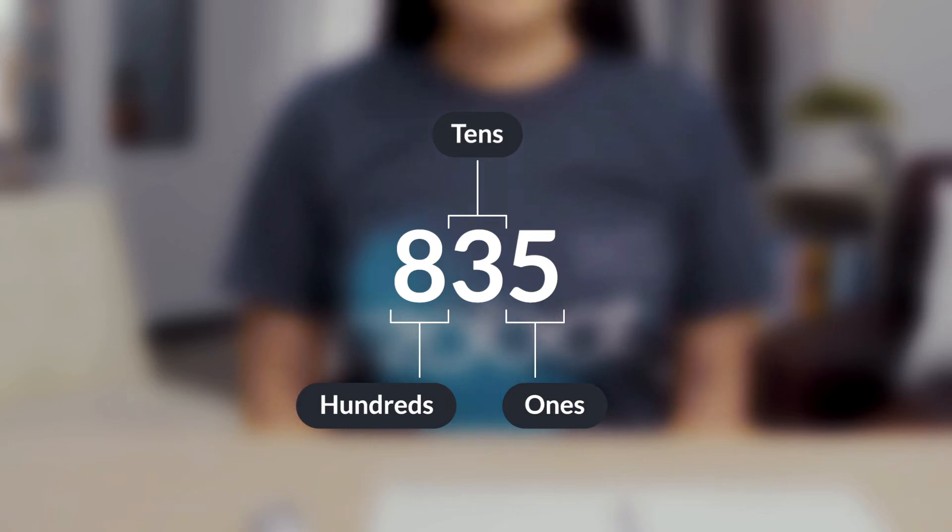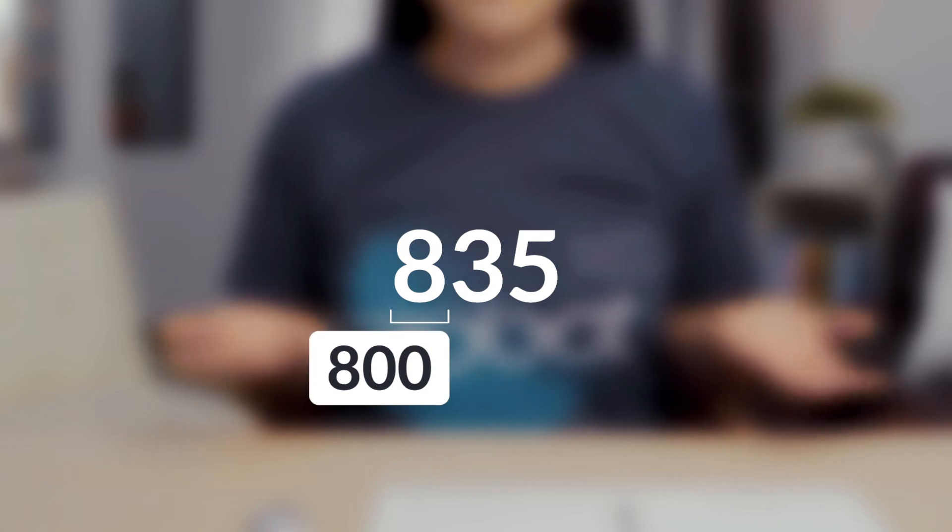The place a number is in tells you how much the number is worth or its value. Since the eight is in the hundreds place, its value is 800. Since the three is in the tens place, its value is 30. Since the five is in the ones place, its value is five.